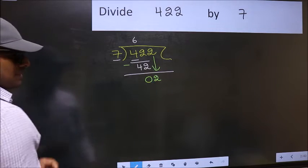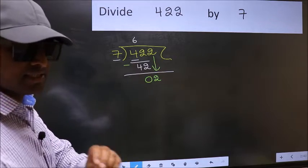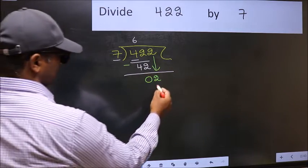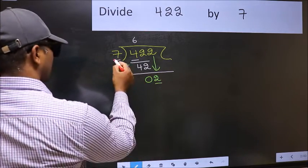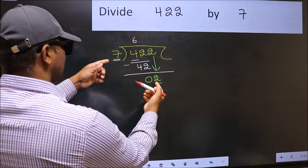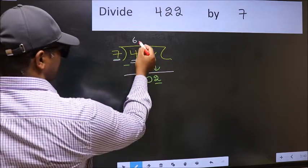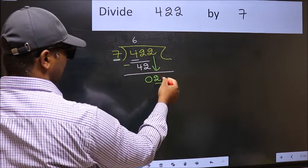After this step, the mistake happens. And the mistake is this. Here we have 2 and here 7. 2 is smaller than 7. So what many do is they directly put dot and take 0.